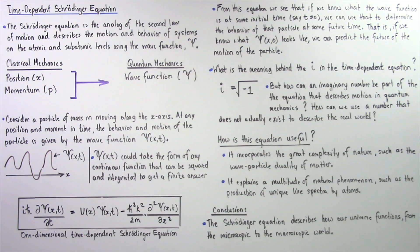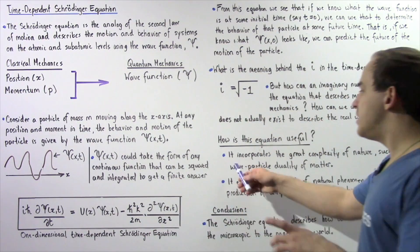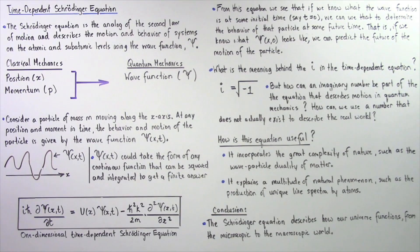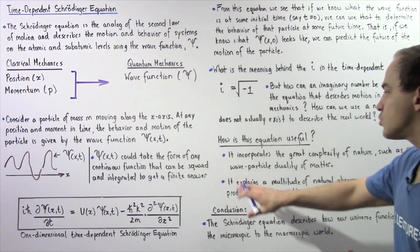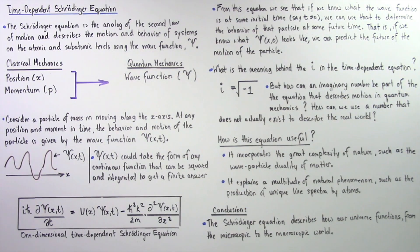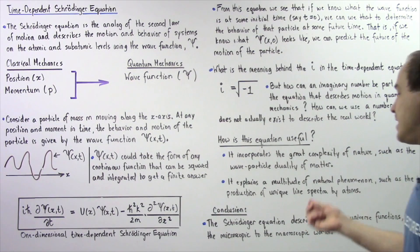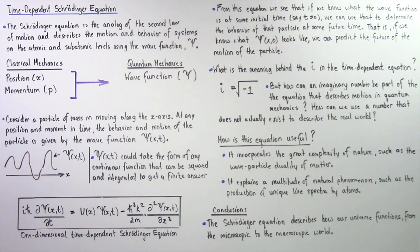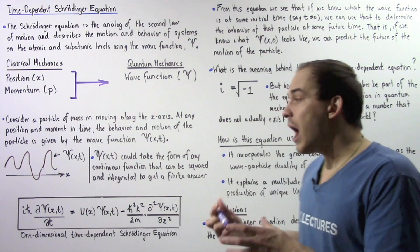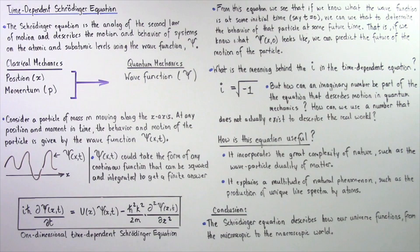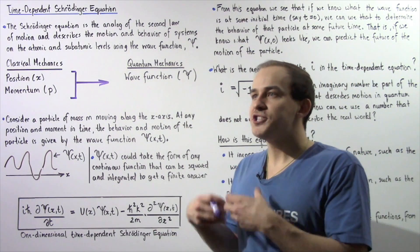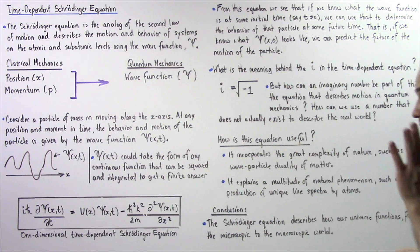Now, the question is: how exactly is this equation useful? This equation basically incorporates the great complexity of nature and our universe, such as the quantum theory of energy as well as the wave-particle duality of matter. Now, this equation — as we'll see in future lectures — explains a great multitude of natural phenomena, such as the production of unique line spectra produced by atoms. In fact, it explains in great detail why certain things take place in the line spectra of atoms — for example, why certain lines appear brighter than other lines.